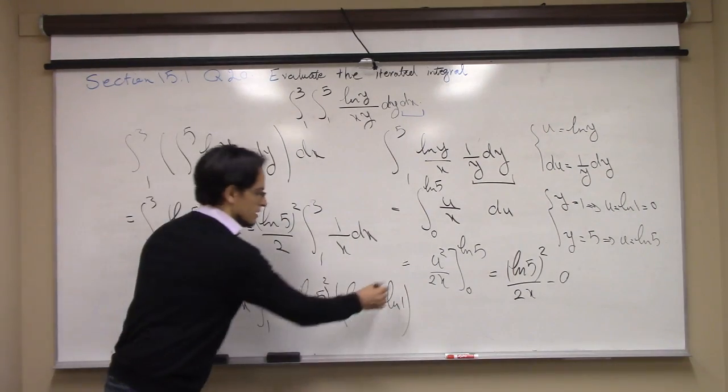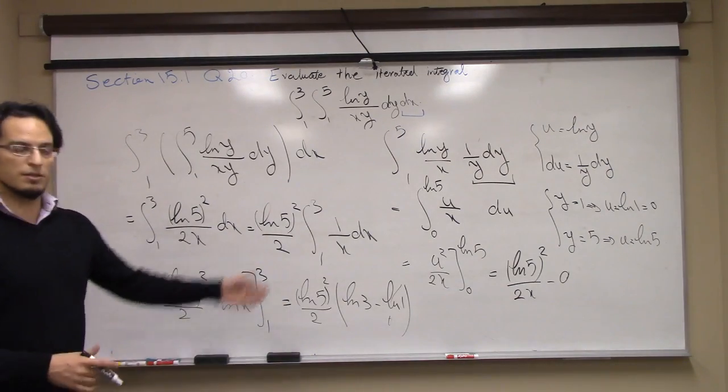ln 1 is 0, so the final result is ln 5 squared over 2 times ln 3.